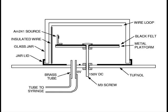Inside the jar, near the top, is a grounded wire loop. Below the loop is a metal platform that is connected to a 150V DC supply. This sets up an electrostatic field between the wire loop and the platform. This field sweeps away old charges and is essential for operation.